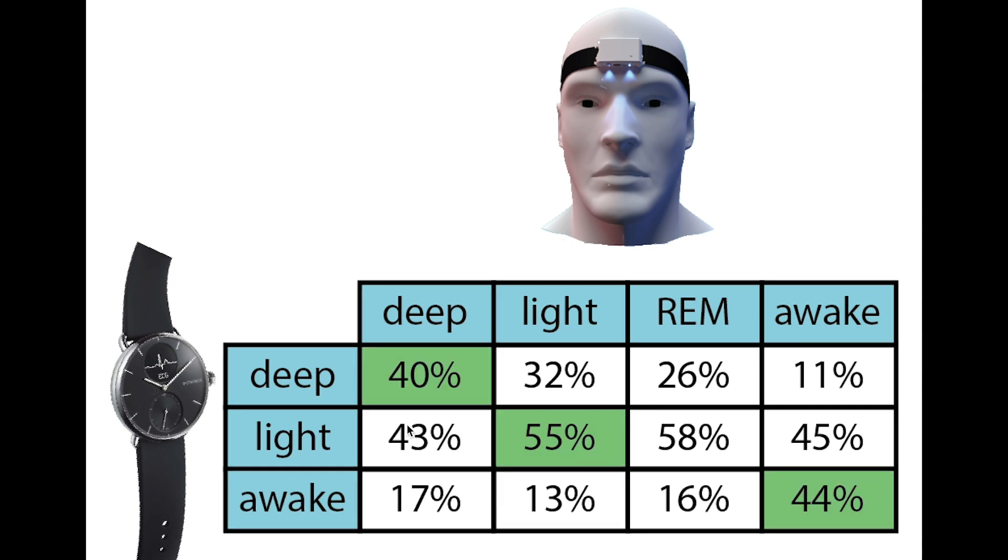Now to summarize if we mark what it gets right we see that deep sleep is not predicted that well, about 40% is predicted correctly. Light sleep is done a bit better and awake is also sort of okay. So this is better than you would expect by random but still I would say it is not that great.